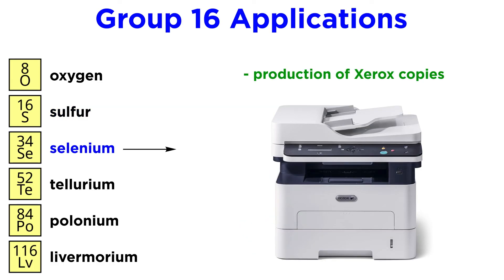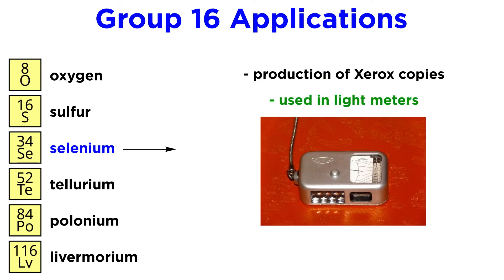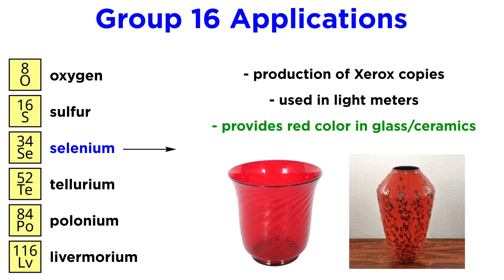Selenium is important for the production of Xerox copies, a process which makes use of the narrow band gap that allows Se8 to act as a conductor. Selenium is also used in light meters, though this is nearly obsolete, and it is found in glass and ceramics, where selenium provides a red color.